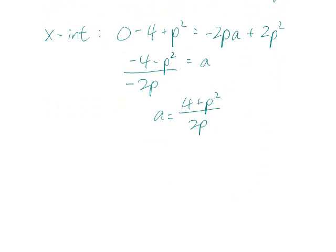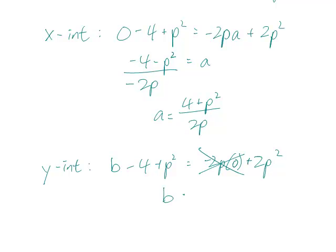And now if we want the y intercept, y intercept is b for the y coordinate, b for the y coordinate, and 0 for the x coordinate. And so this goes away, and b equals p squared plus 4, so b is a little simpler than a.